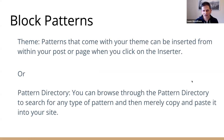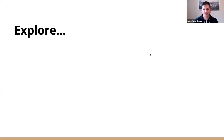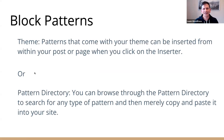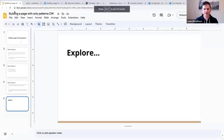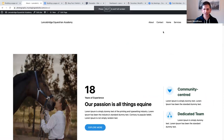There are two ways to add patterns to your post or page. Patterns that come with your theme can be inserted from within your post or page when you click on the inserter, or you can browse through the pattern directory to search for any type of pattern and then simply copy and paste it into your site. Let's go and explore — I'm going to go to my test website.